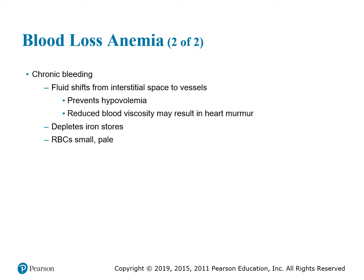With chronic blood loss, fluid shifts from the interstitial space to vessels, which prevents hypovolemia. Reduced blood viscosity may result in a heart murmur. Depleted iron stores mean RBCs are small and pale. You may have low iron from an internal hemorrhage you don't know about, from the body not taking in enough iron, or from an inability to absorb iron — which you might see with a B12 deficiency. The RBCs may be small and immature.